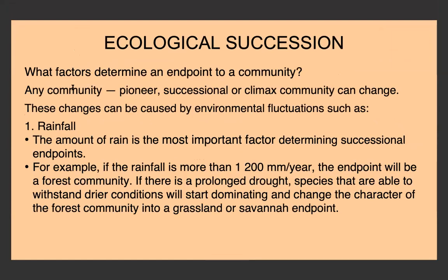What factors determine the endpoint of a community? Any community — whether pioneer, intermediate, or climax — can change. Environmental fluctuations such as rainfall are probably the most important factor. If rainfall is more than approximately 1,200 millimeters per year, the endpoint is usually a forest community. If there's a prolonged drought, species that can withstand dry conditions will dominate over those that need a lot of water, and the forest community character will change into a grassland or savannah endpoint.